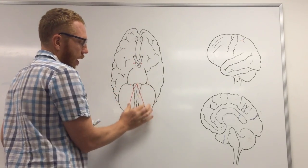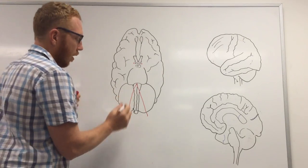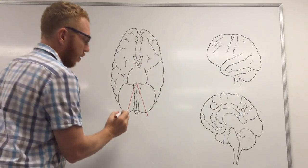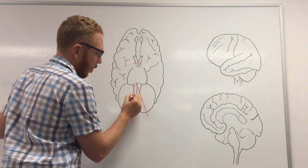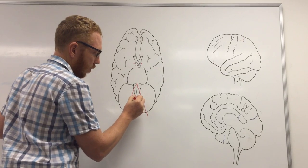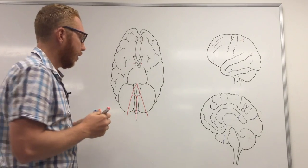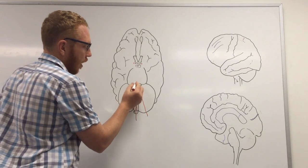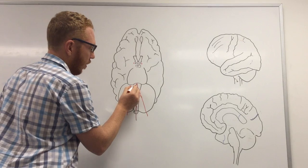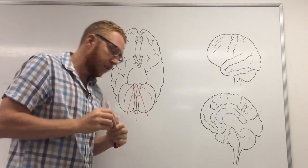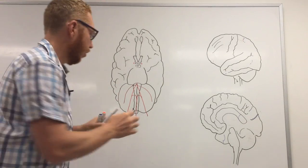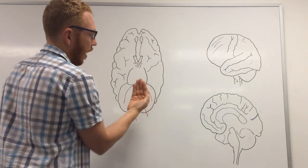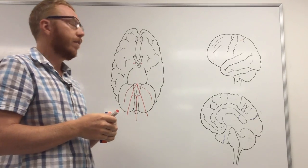Now coming up on either side, the vertebral arteries give off three main branches. On the left and right sides, as they travel upward, one branch comes down toward the spinal cord — that's the anterior spinal artery. There's also one that wraps around the back giving the posterior spinal artery. Before they join in the midline, another branch comes off — the posterior inferior cerebellar artery, which goes down and sits on the underside and posterior surface of the cerebellum.